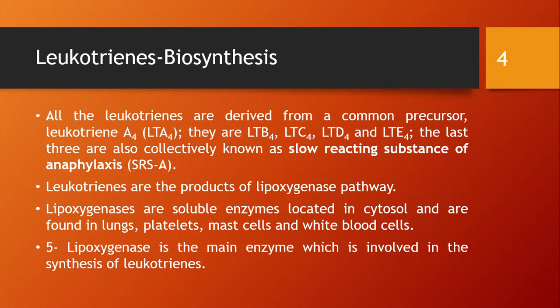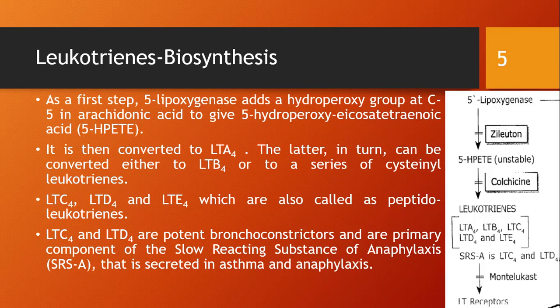5-Lipoxygenase is the main enzyme involved in the synthesis of leukotrienes. It adds a hydroperoxide group at C5 of arachidonic acid to give 5-hydroperoxyeicosatetraenoic acid, abbreviated as 5-HPETE. Please correlate this theory with the diagram or flowchart on the right side.